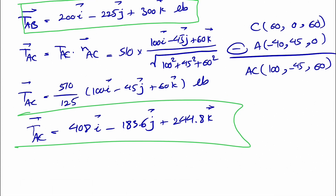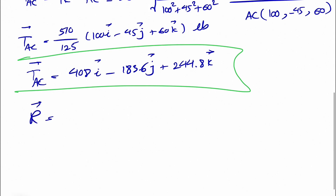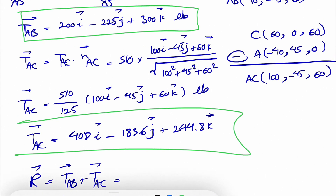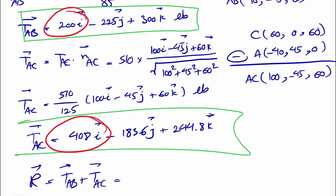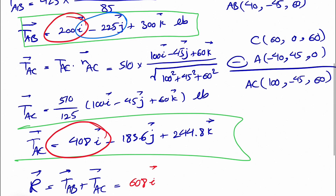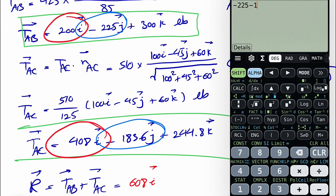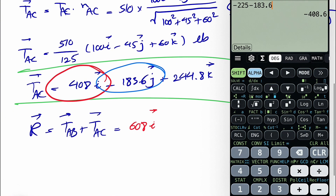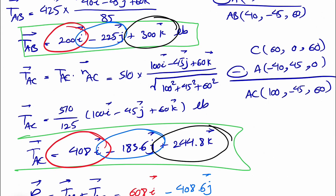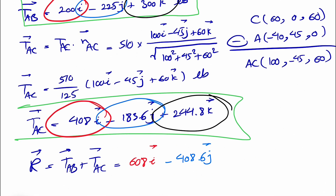We now have TAB and TAC, and we're looking for the resultant R, which equals TAB plus TAC. Adding X components: 200 + 408 = 608i. Adding Y components: −225 + (−183.6) = −408.6j. Adding Z components: 300 + 244.8 = 544.8k. So the resultant is R = 608i − 408.6j + 544.8k pounds.